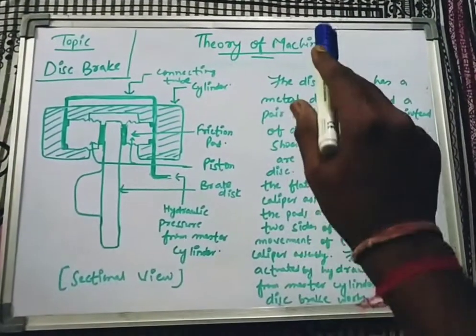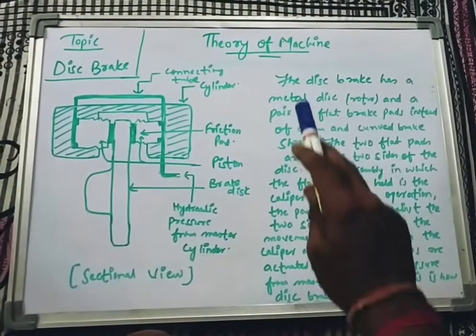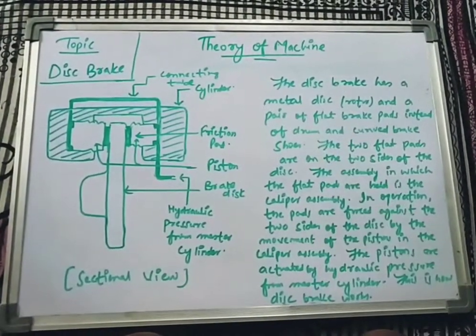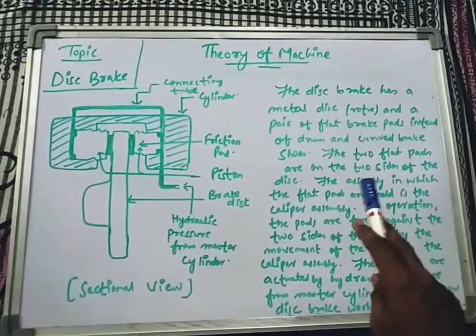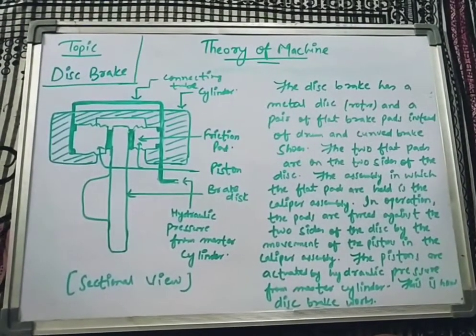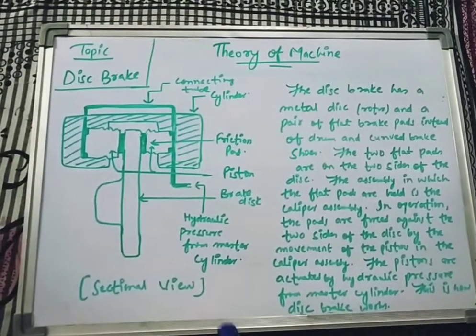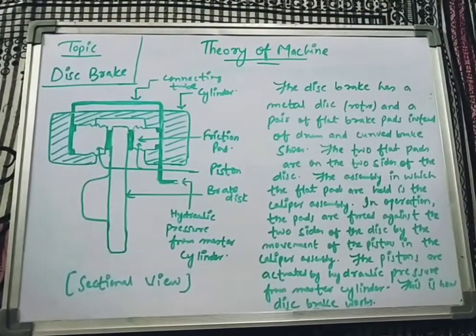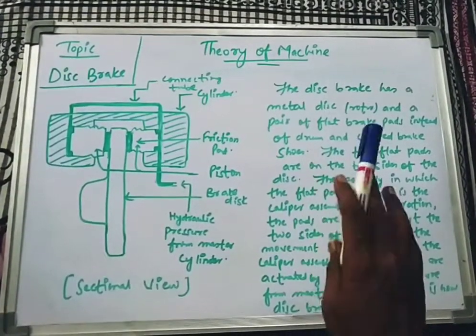The disc brake has a metal disc and a pair of flat brake pads instead of drum and curved brake shoes. In previous cases like shoe brake, band brake, or internal expanding brake, we had brake shoes, a block, a band, or leather. But in this case, we have a metallic disc.